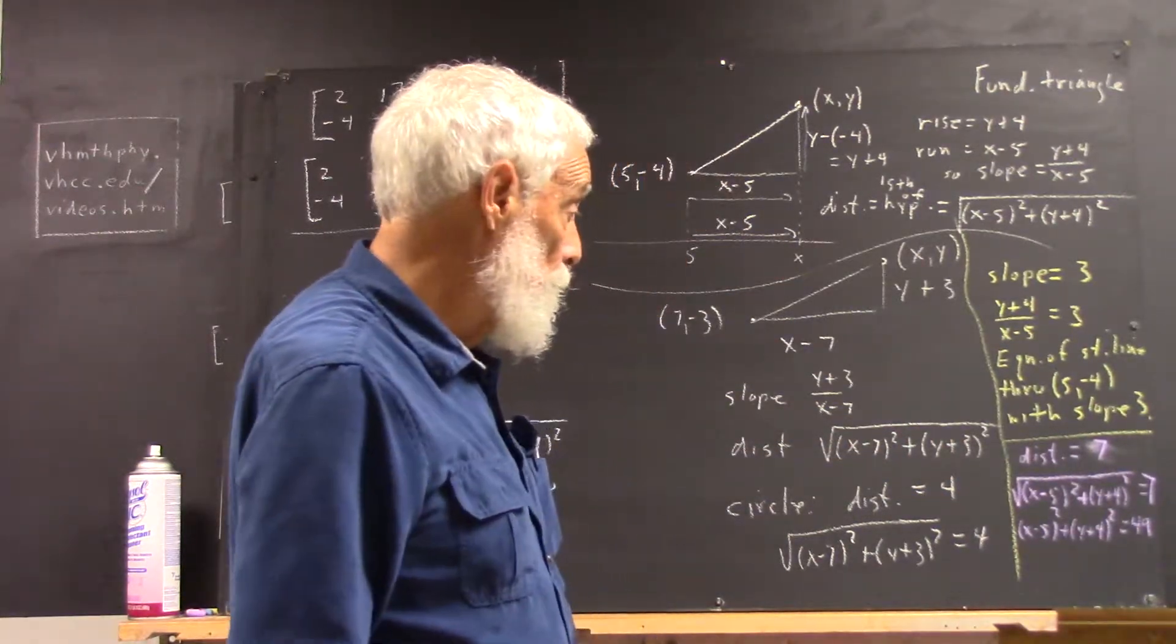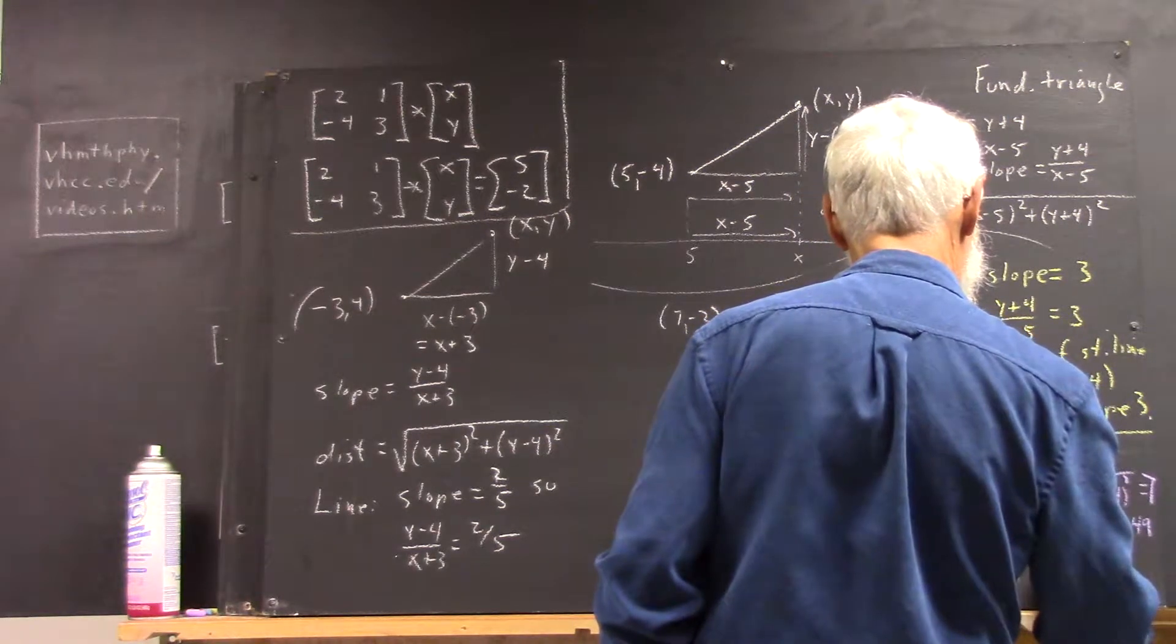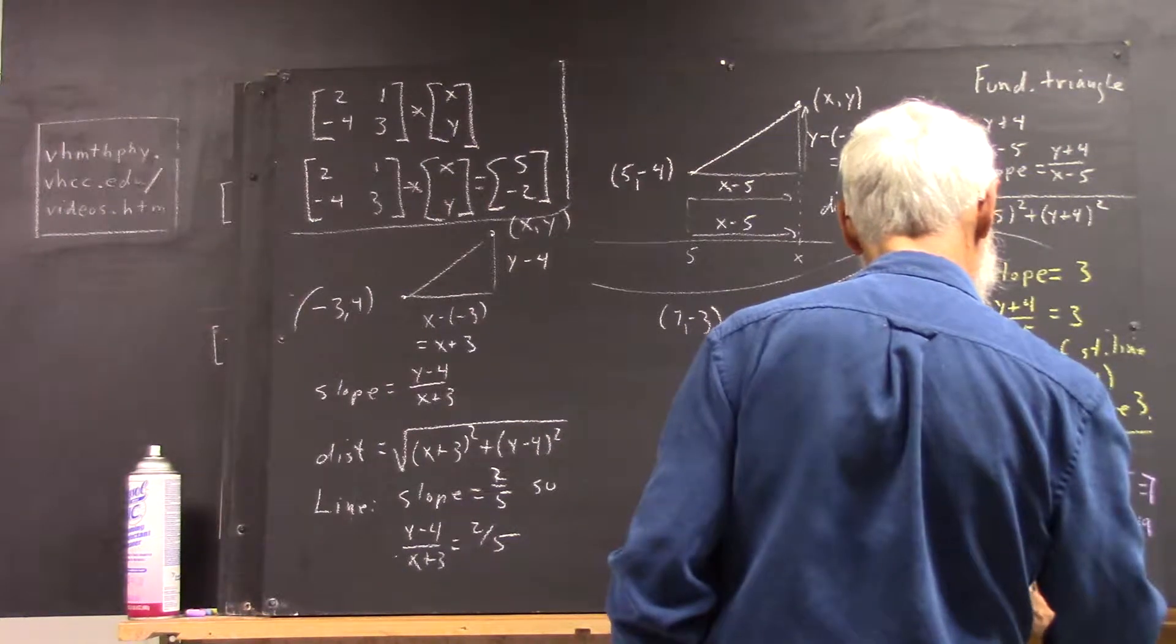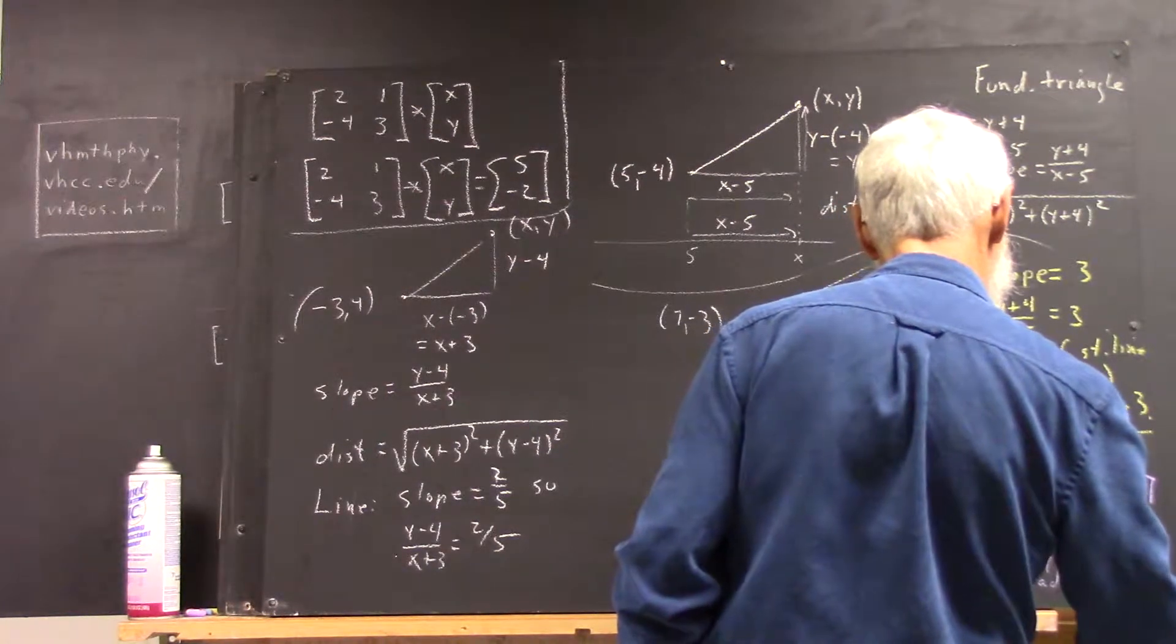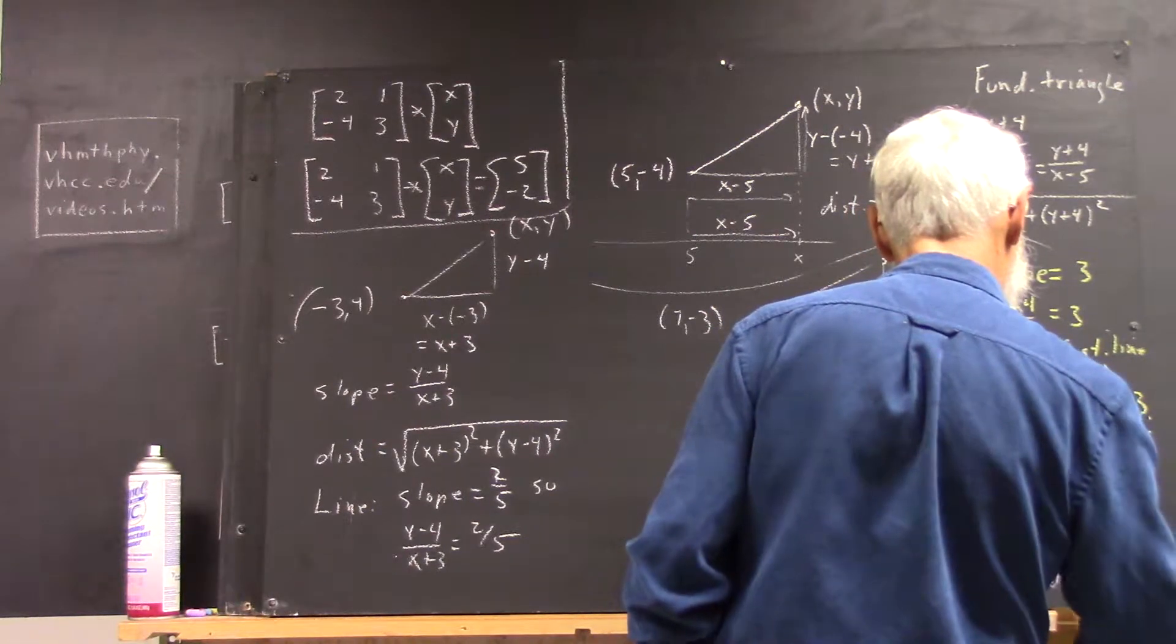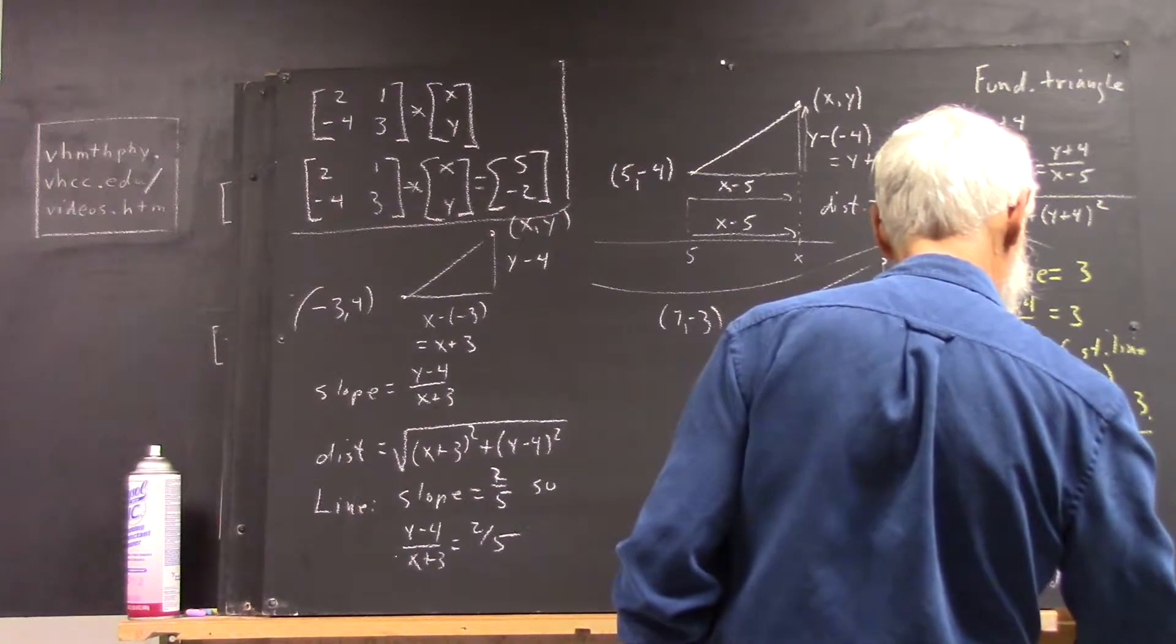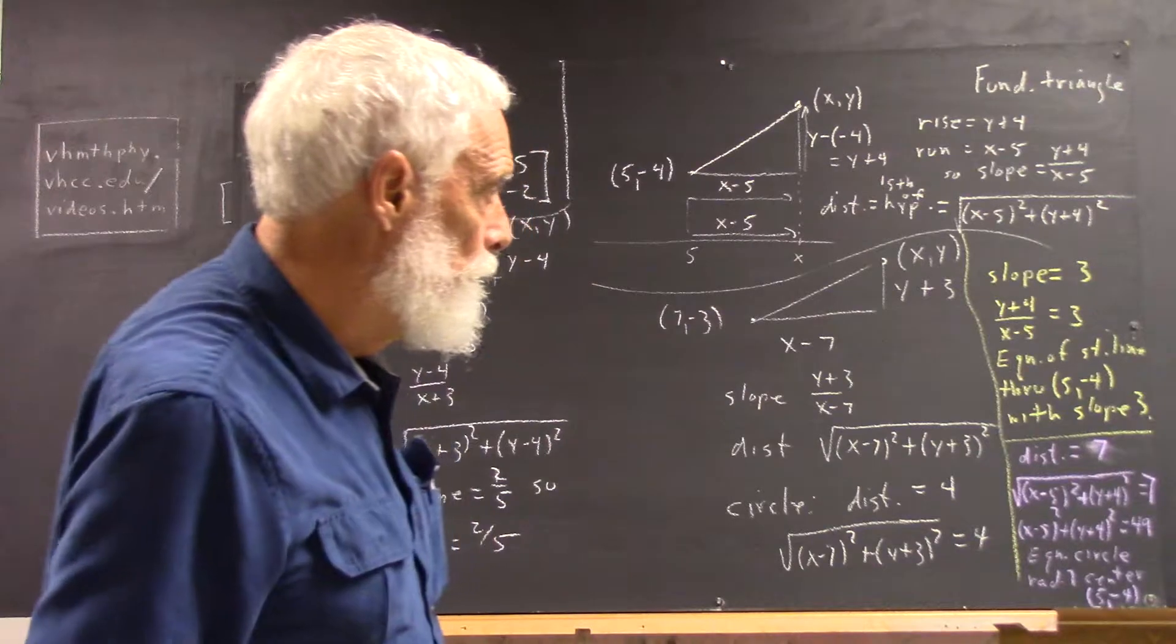So, this is an equation of a circle of radius 7 center, just about out of room, center at the point 5 negative 4.